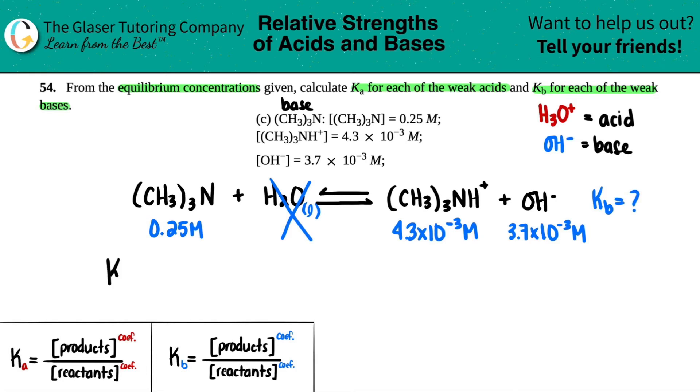Now let's write out our Kb equation. Remember, it's just like any K value - it's always products divided by reactants raised to the coefficients. But it's all one-to-one here; acid-bases are usually going to be like that. If you have two components on one side, remember it's being multiplied together, not added. So we have [(CH3)3NH+] times [OH-] divided by [(CH3)3N].